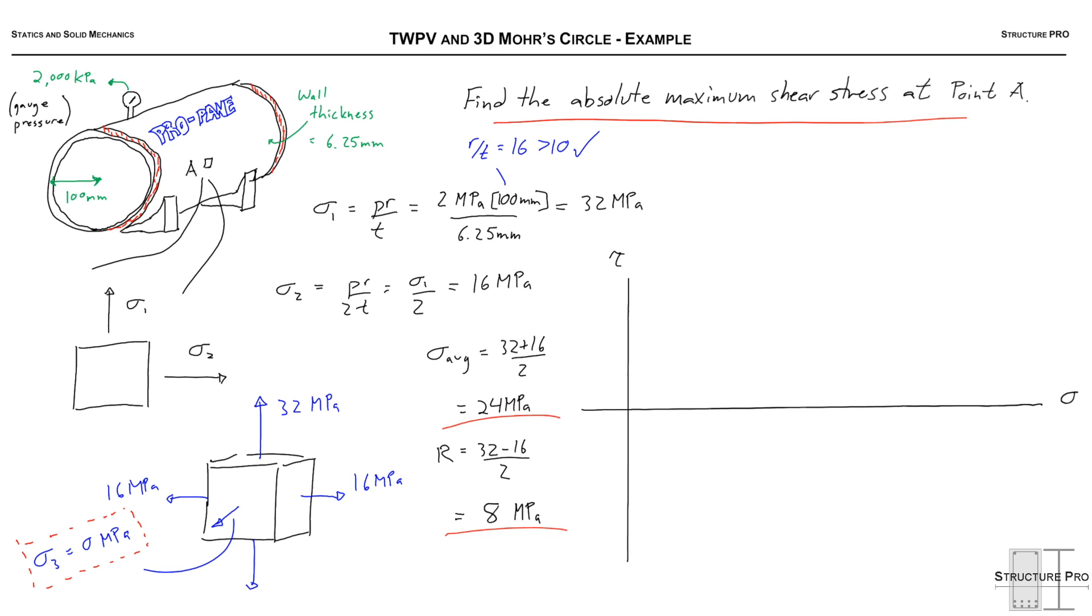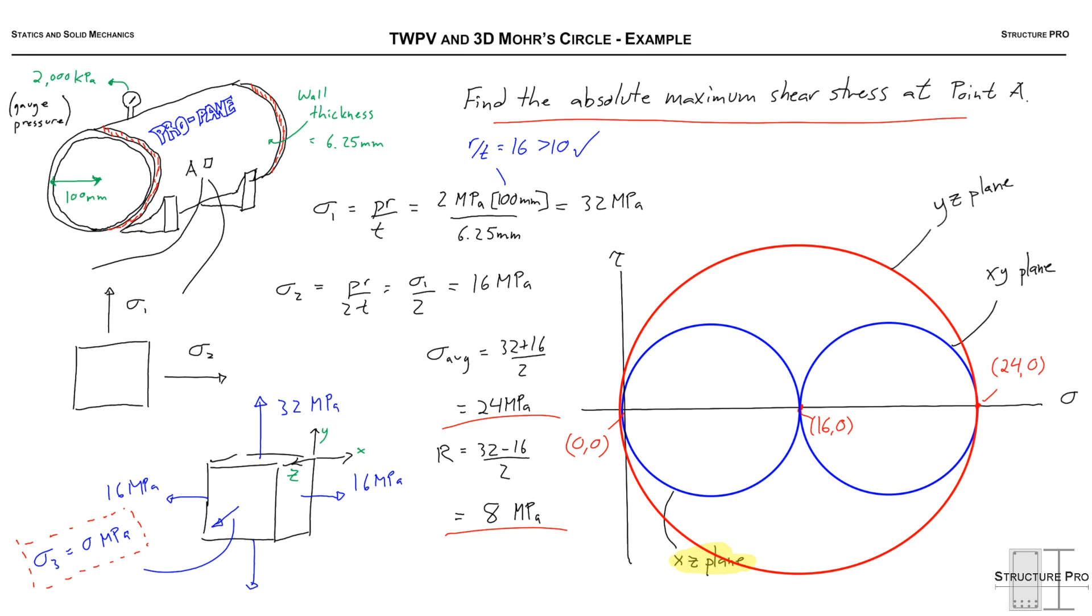In three dimensions you're gonna have three Mohr circles, one for each plane, one for each way of looking at this cube from the top, from the side, and from the front. Now let's say sigma 1 is equal to the Y direction, sigma 2 is the X, and sigma 3 is the Z direction.